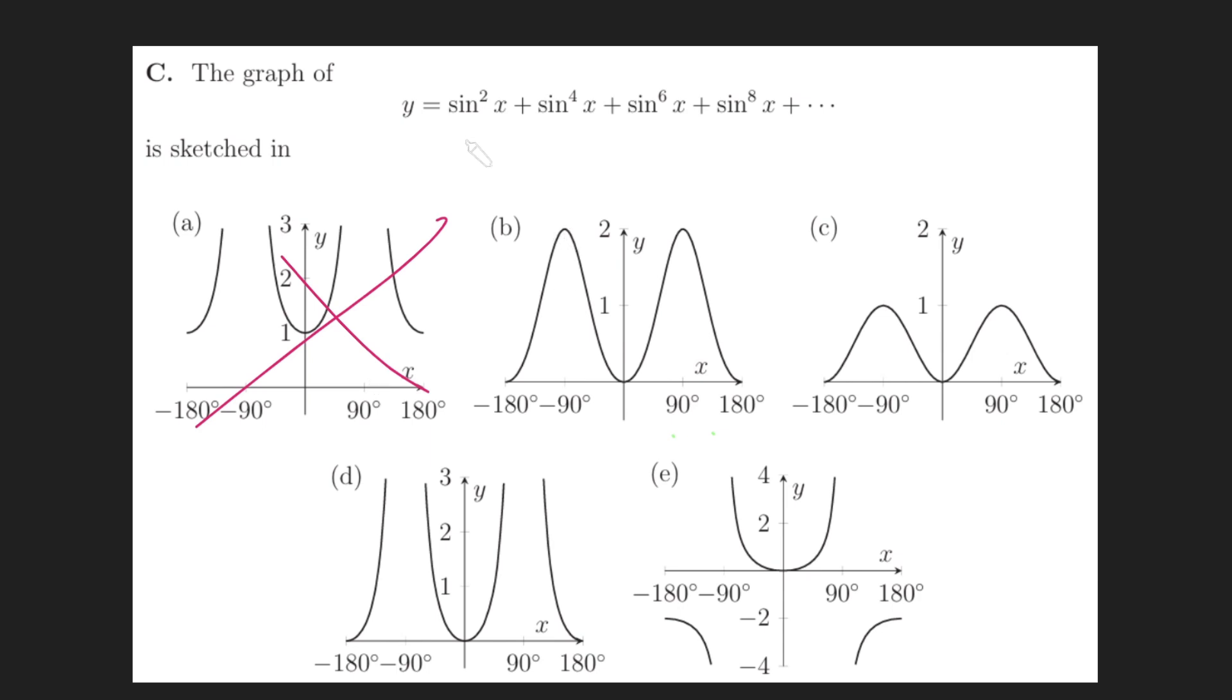OK, cool. We also know that sin x can potentially be 1. In particular, it's going to be 1 when x is pi over 2. And so that means that when x is pi over 2, y would be 1 plus 1 plus 1 plus 1, so basically infinity.